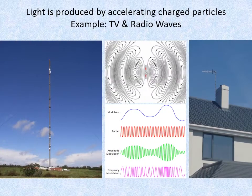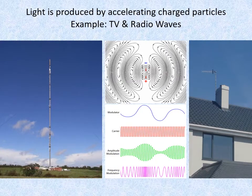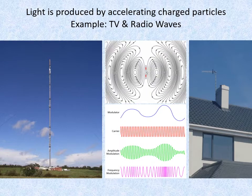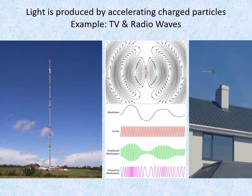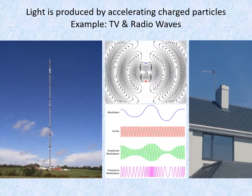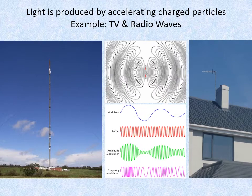Light is produced by accelerating charged particles. For example, let's look at TV and radio broadcasts. In a radio or TV transmitter, the charged particles or electrons are accelerated up and down the aerial at certain frequencies by passing electric current through it.